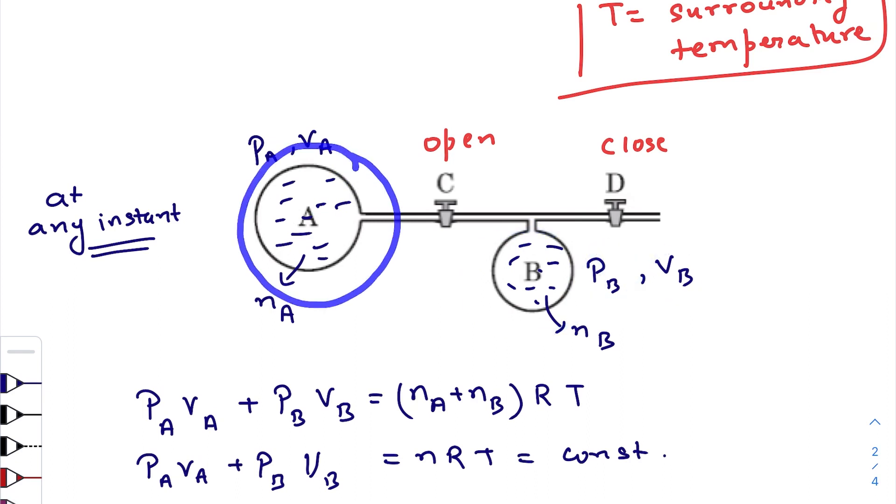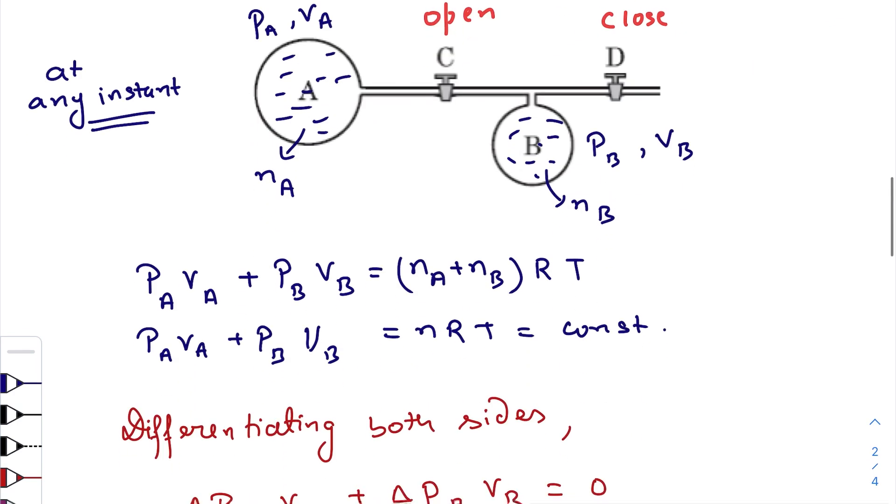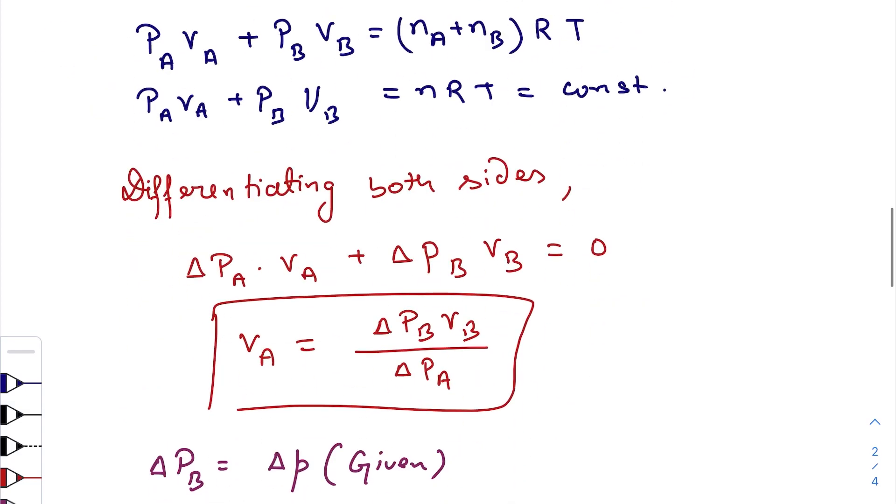So we can say that PAVA + PBVB = (nA + nB)RT, where this thing is constant of course, as we have discussed earlier. Now if you differentiate both sides, we get something like this. So VA equals to ΔPB·VB divided by ΔPA. Of course there will be a negative sign here.